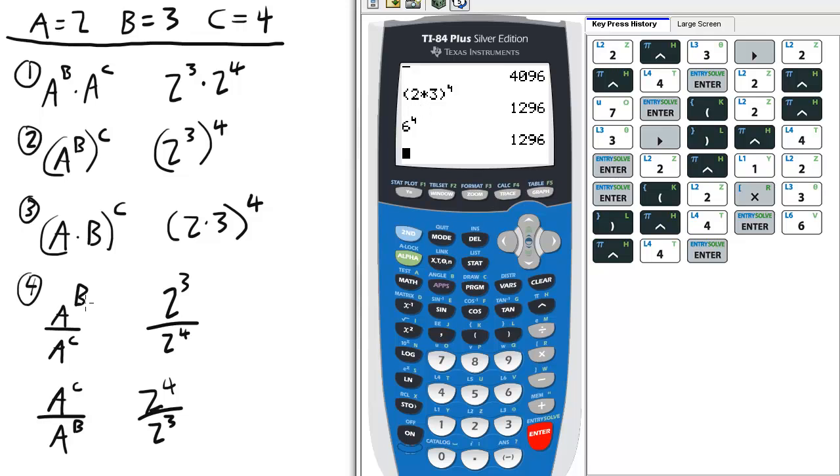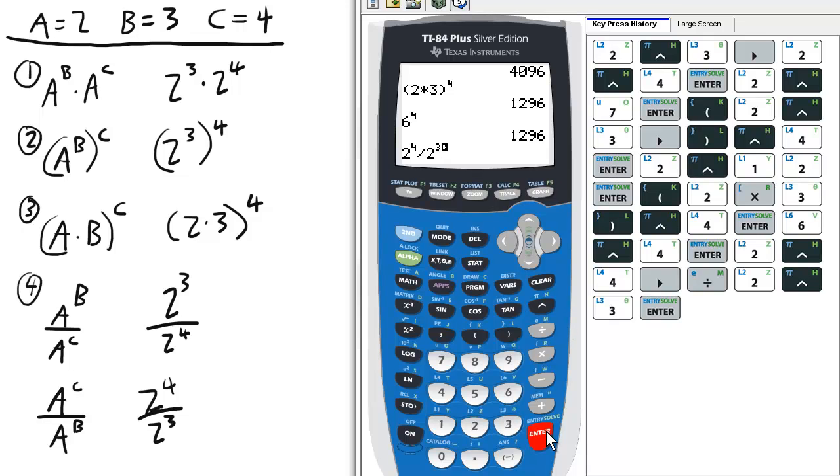Last case, when we're dividing like bases, it might be easier if we choose this second one: 2 to the 4th over 2 cubed. So I'll do that. So 2 raised to the 4th. Again, scroll over one space so we can divide correctly. Then divide 2 raised to the 3rd, and enter.